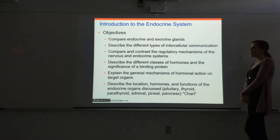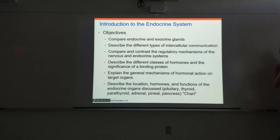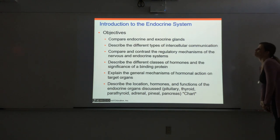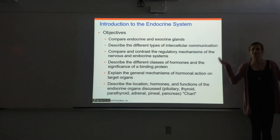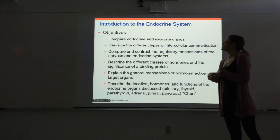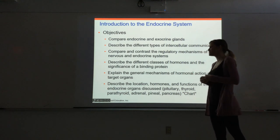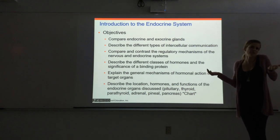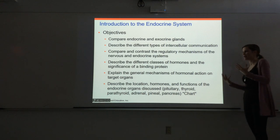By the end of the chapter you should be able to compare the different types of glands — endocrine and exocrine — and describe the different types of intercellular communication: direct, endocrine, and synaptic. You should also compare and contrast the regulatory mechanisms of the nervous system and the endocrine system, talk about the different classes of hormones, and explain the significance of a hormone having a binding protein. You should be able to discuss the general mechanisms of hormonal action — what happens when a hormone binds to a receptor, whether it binds extracellularly or intracellularly and why.